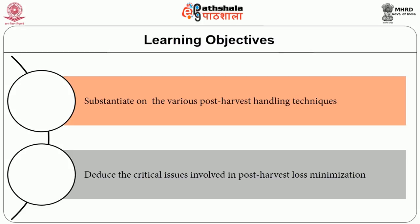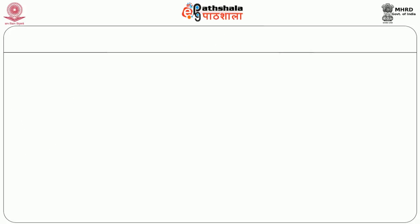Generally, losses on agricultural producers take place in the period between the initiation and the completion of harvesting, followed by on-farm losses and post-harvest handling losses. These losses continue along the agricultural commodity chain until it reaches the consumer. On-farm losses include post-harvest handling stages: cooling, cleaning, sorting and grading, packing, transportation, and finally storage. Let us discuss about harvesting, which is the first step in the processing.